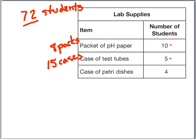Go ahead and see how many cases of petri dishes we need, if 4 students can use a case with 72 students. Pause the recording and see if you can calculate that out, and let me know how much is left over. Did you come up with 18 cases needed? And how many left over? None — they're going to use them all.